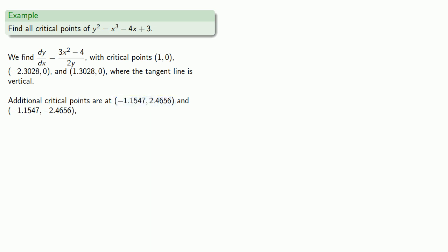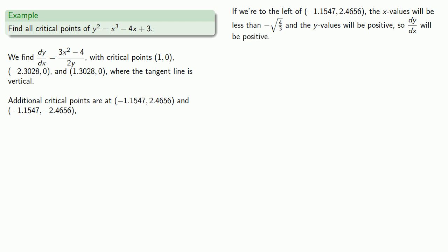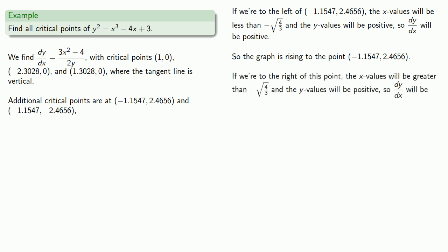Consider the first critical point, whose x-coordinate is the decimal equivalent of negative square root of 4 thirds with a positive y value. To the left of this point, x is less than negative square root of 4 thirds and y is positive, so the derivative is positive — the denominator and numerator are both positive, meaning the graph is rising up to meet that point. To the right, x is greater and y is still positive, making the derivative negative, so the graph is falling from this point. Therefore, this point is a local maximum.